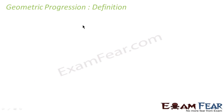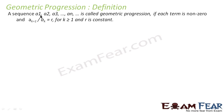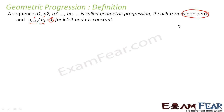Now we will define geometric progression in mathematical terms. A sequence a1, a2, a3, ..., an is called a geometric progression if each term is non-zero — please note this is crucial, because if one term is zero, multiplying by it will always give zero. Any term a(k+1) divided by a(k) equals r, where k is greater than or equal to 1, and r is a constant. r can be less than 1; that doesn't matter.